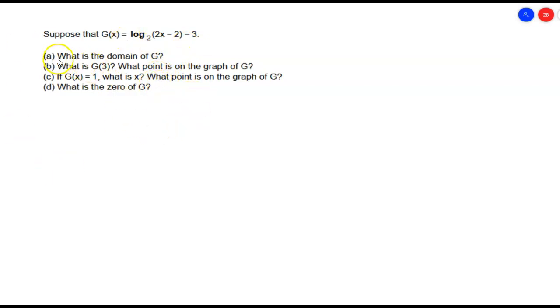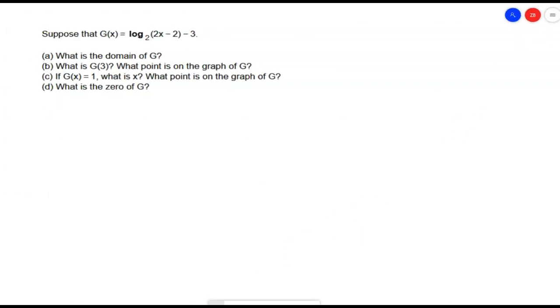The first thing they want us to do is find the domain of our function. The domain is all the possible x values that we can put inside this function. When we did it with the rational functions and some of the radicals, it's any x that we can put in here that's going to give us a defined y value. Now, one thing that we should have learned about logarithmic functions is that we can't take the log of anything that's 0 or negative. We can only take the log of positive numbers.